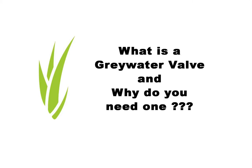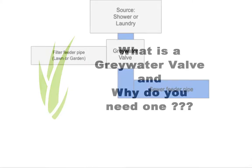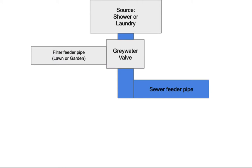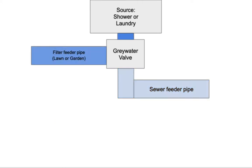What is a gray water valve and why do you need one? You need to have the option of diverting the gray water to the sewer or out to your lawn or garden. Why do you need that option?